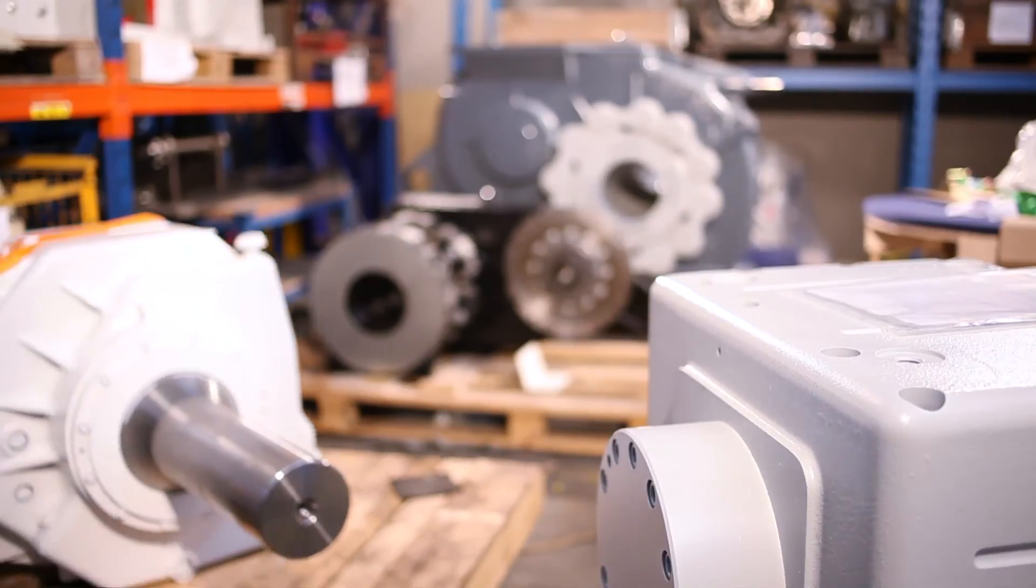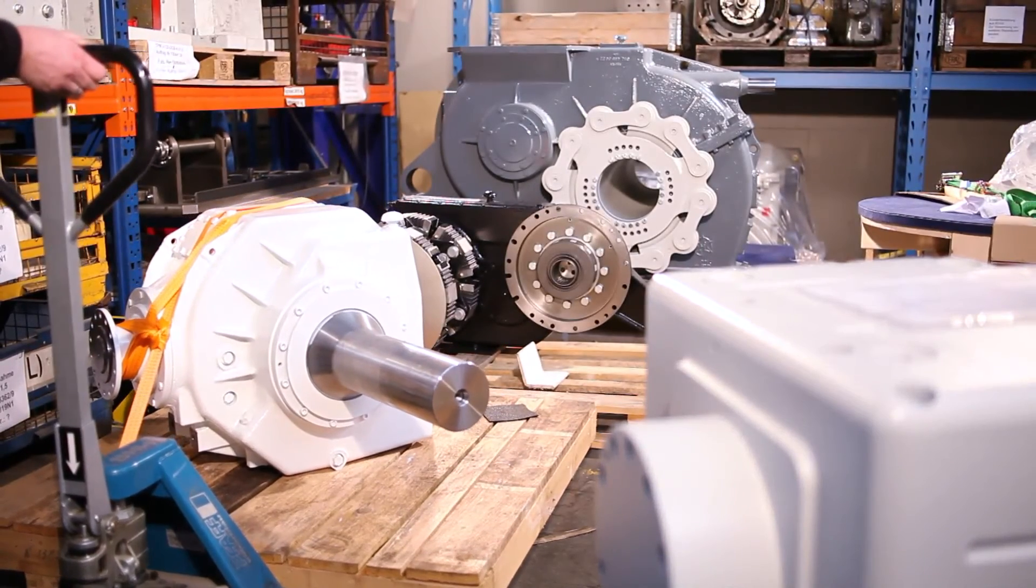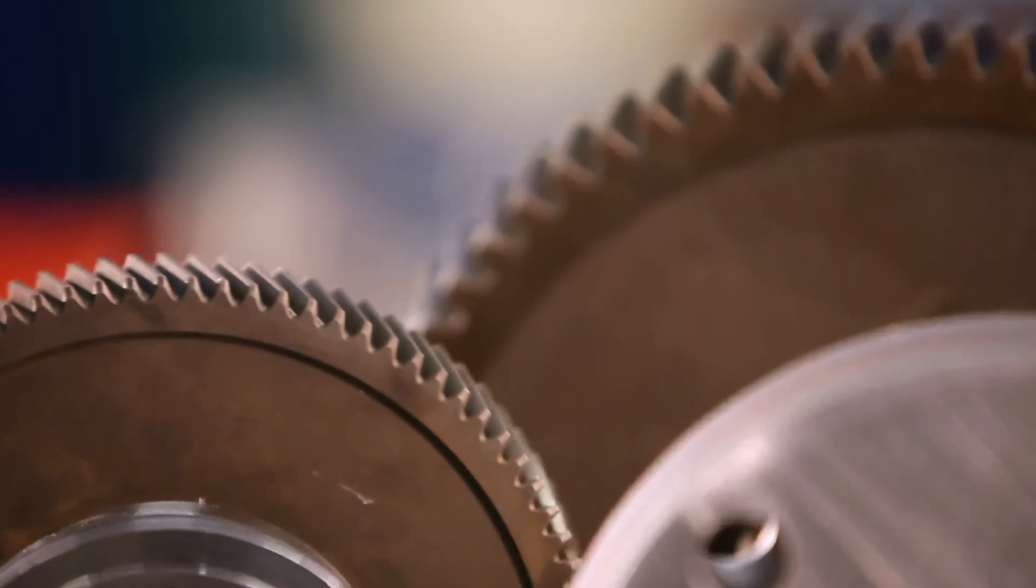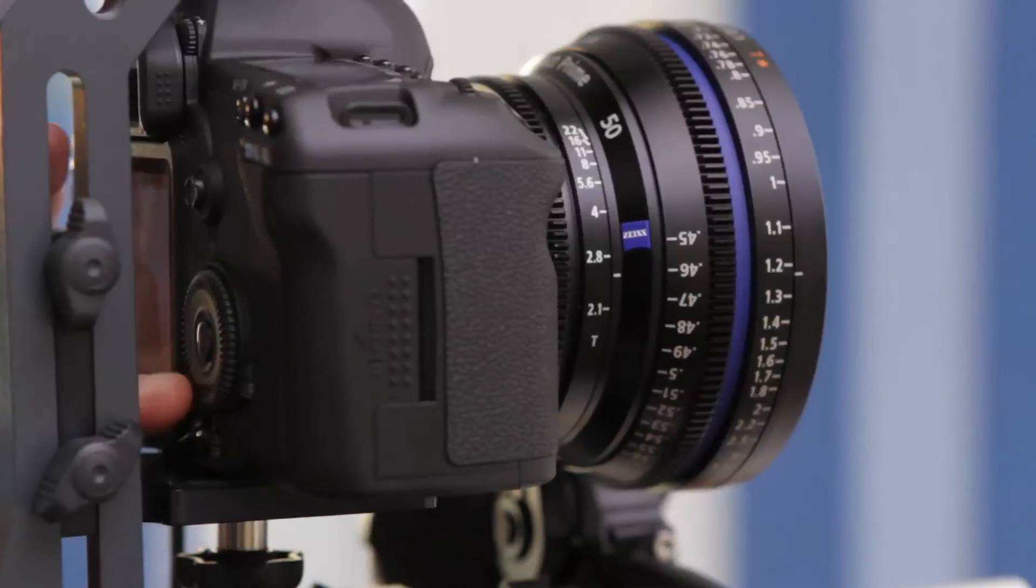Gearboxes for locomotive axles have a lifespan of up to 30 years, which we have to guarantee. To do that, you need high quality and low tolerances. But we can only achieve that with a highly competent production process and high quality measuring technology.